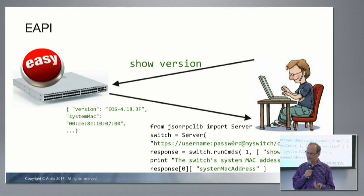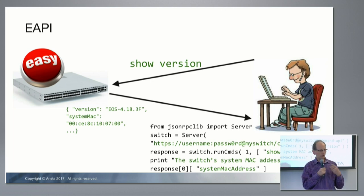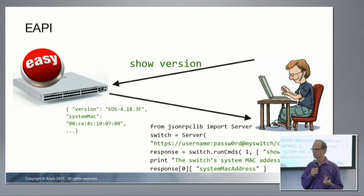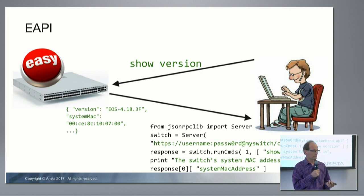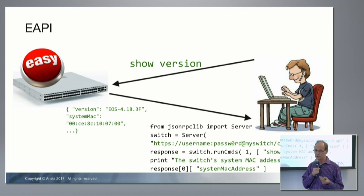Then you have one API function — run commands — which takes a vector of character string commands to run. What's wonderful about this is that you already know how to use it.